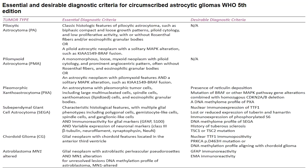SEGA, subependymal giant cell astrocytoma, shows multiple glial phenotypes including polygonal cells, gemistocyte-like cells, spindle cells, and ganglion-like cells, with immunoreactivity for GFAP and S100 and variable expression of neuronal markers including beta-tubulin, neurofilament, synaptophysin, and NeuN. Desirable diagnostic criteria include nuclear immunoexpression of TTF1, lost or reduced expression of tuberin or hamartin, immunoexpression of phosphorylated S6, DNA methylome profile of SEGA, and a history of tuberous sclerosis or TSC1/TSC2 mutation.